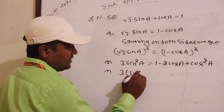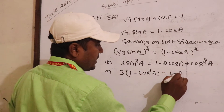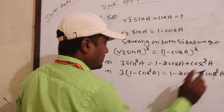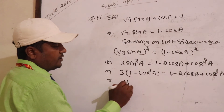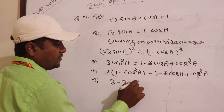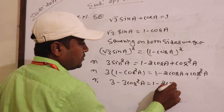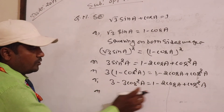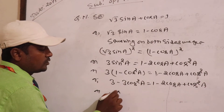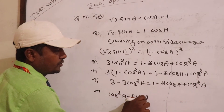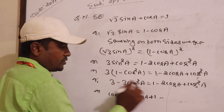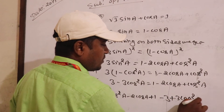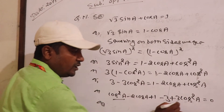1 minus cos squared is 1. So 1 minus 2 cos A for this. Cos squared: 3 in a multiple coordinate. So 3 minus 3 cos squared A equal to 1 minus 2 cos A. You have 3 minus 1 plus 3 cos squared equal to 6, combining 3 and 1.